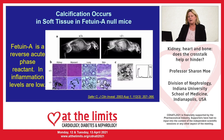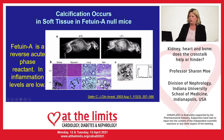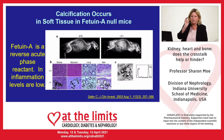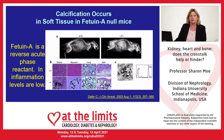Fetuin-A is a reverse acute phase reactant, so during inflammation, the levels are low. In knockout animals, you see diffuse soft tissue calcification throughout the organs, including the myocardium and kidney, in the form of hydroxyapatite. In the presence of CKD, you have a double whammy: inflammation knocks down the fetuin-A, and you have increased calcium and phosphorus. Fetuin-A acts like a vacuum cleaner, going through the blood and grabbing initiators of mineralization — calcium and phosphorus particles — and getting rid of them through the reticuloendothelial system.